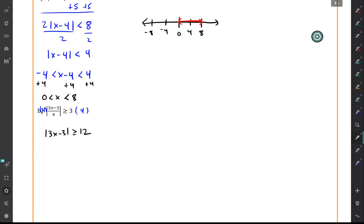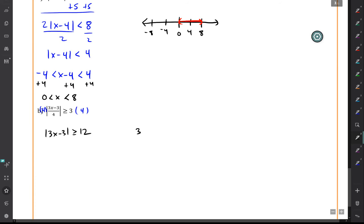So multiplying by 4 is just kind of simplifying things a little bit. And now we need to apply the rule that if the absolute value is greater than a number, then it's going to be an either or statement. So it's either 3x minus 3 is bigger than or equal to 12, or greater than or equal to 12, or 3x minus 3 is less than or equal to negative 12.